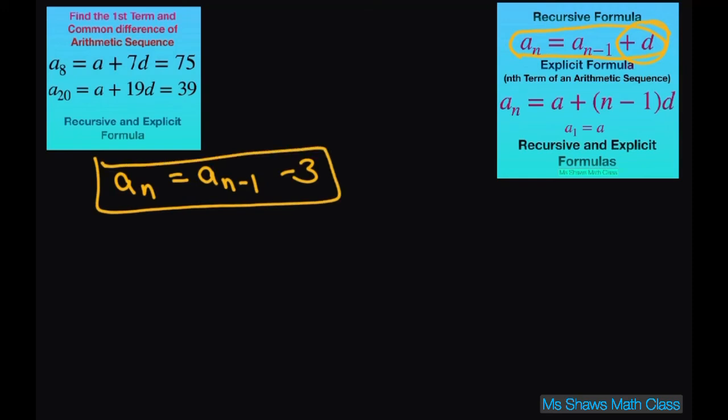Your Nth term or your explicit formula is a little harder. So you just write A sub N equals your first term. And our first term was 96. I should write this. Our first term was 96. And our common difference was negative 3.